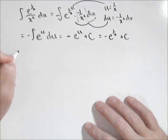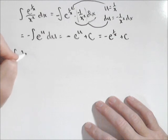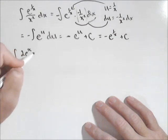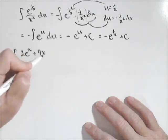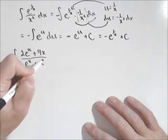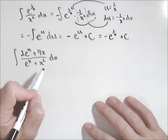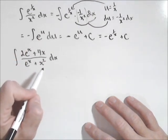Let's do another one that also involves u-substitution. We have two e to the x plus 4x all over e to the x plus x squared dx. Now, this is not a real obvious u-substitution.